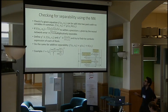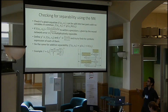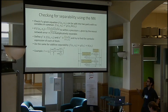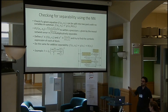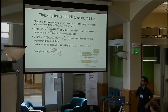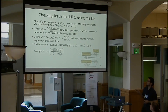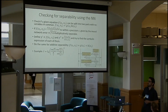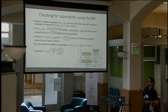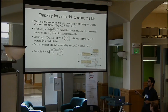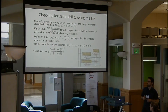The next thing we do with the neural network is to check for separability — whether a given equation can be split into two parts that don't share variables. If the separability condition holds, where c1 and c2 are some constants, to within a precision epsilon given by the neural network, it means the function is multiplicatively separable. We then define two new variables in terms of the original function and constants c1 and c2, find symbolic expressions for each, and combine them at the end. We do the same for additive separability.